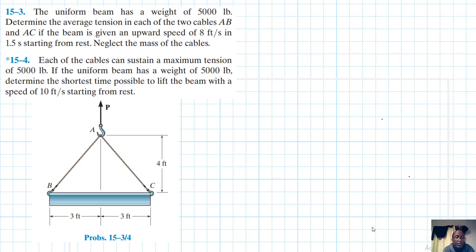Hello, I welcome you all. The problem reads: a uniform beam has a weight of 5,000 pounds. Determine the average tension in each of the two cables AB and AC if the beam is given an upward speed of 8 feet per second in 1.5 seconds starting from rest. Neglect the mass of the cables.